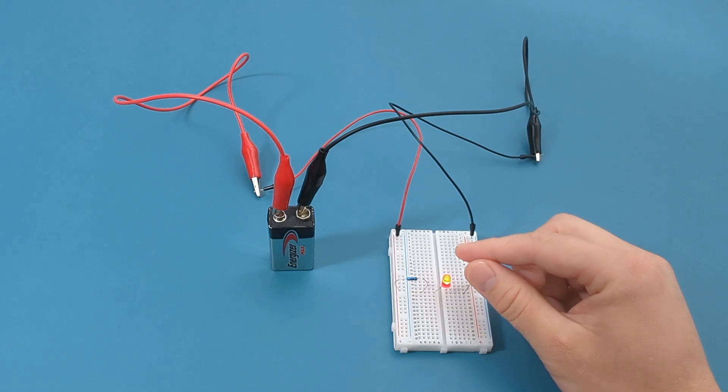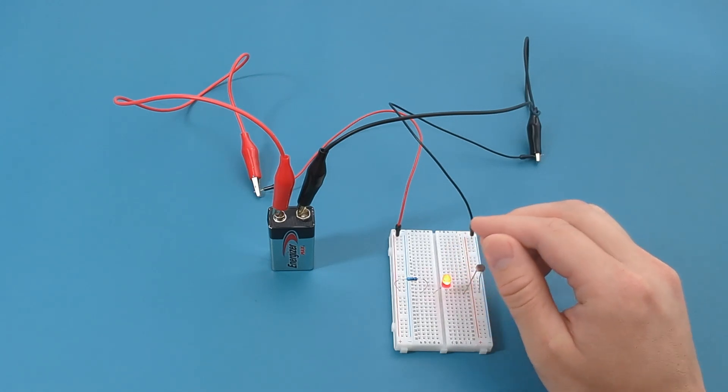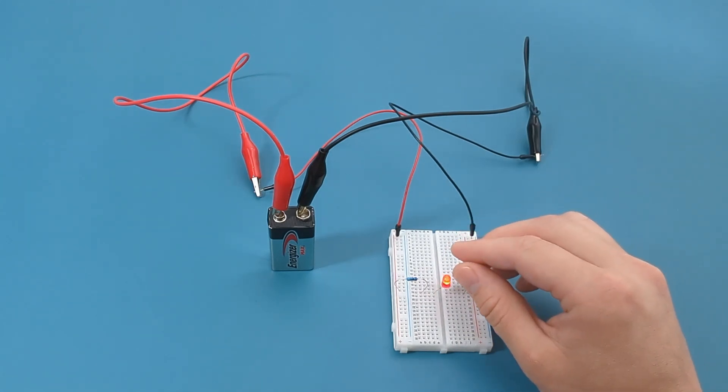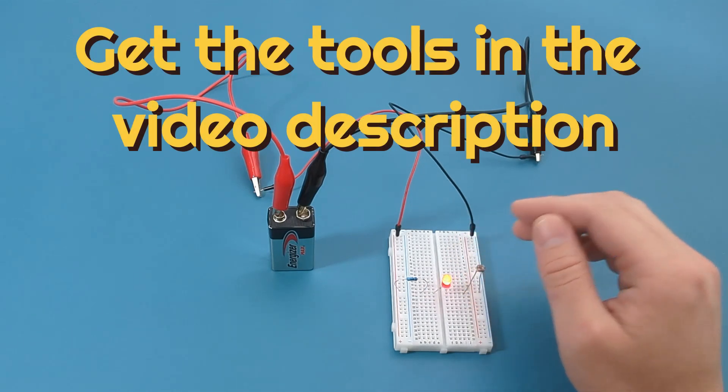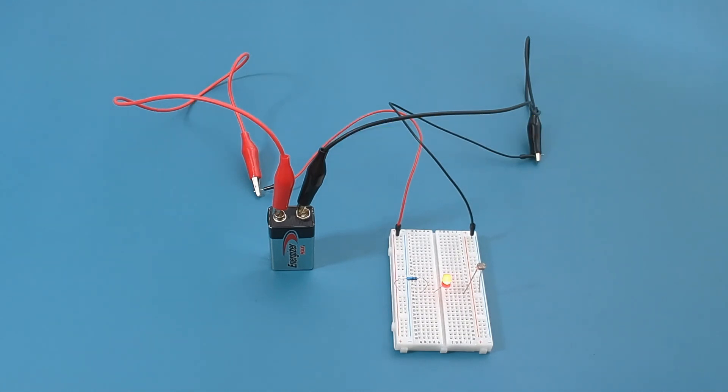To test the LDR, I will shade it with my hand. Observe how the brightness of the LED changes. The LED is very dim when I cover the LDR.